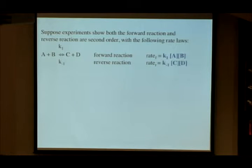On the bottom, our rate is going to be equal to the little rate constants. For the reverse reaction, it's the reverse rate constant k₋₁. In the reverse direction, our reactants are the products for the forward direction, C and D.